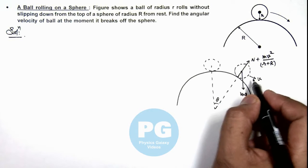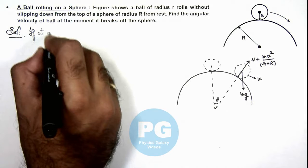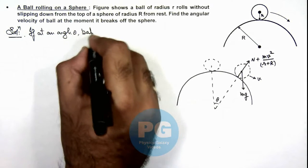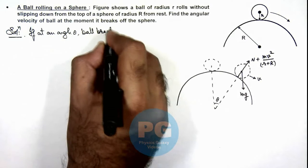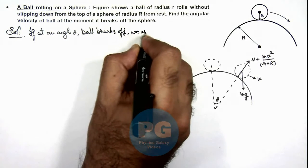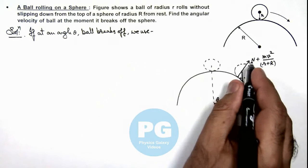Here we can write if at an angle theta the ball breaks off, we use in this situation at this point N becomes zero.